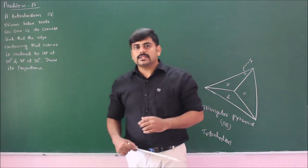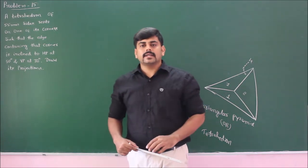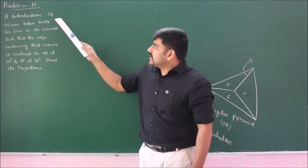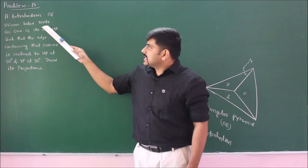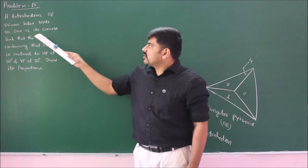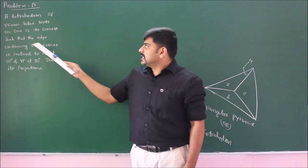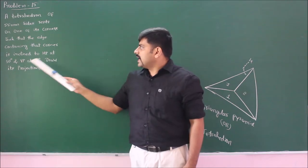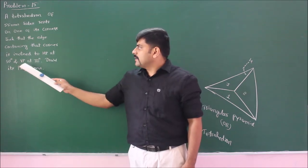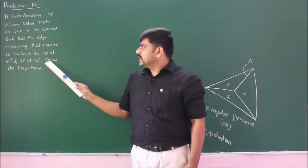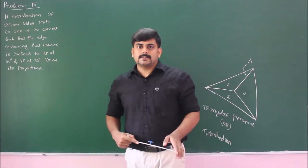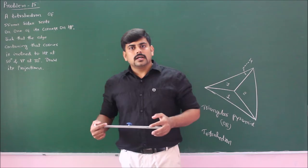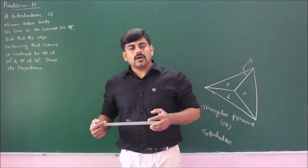Let us solve problem number 15 based on the triangular pyramid. The problem states: a tetrahedron of 55 mm sides rests on one of its corners such that the edge containing that corner is inclined to HP at 50 degrees and VP at 30 degrees. Draw its projections.